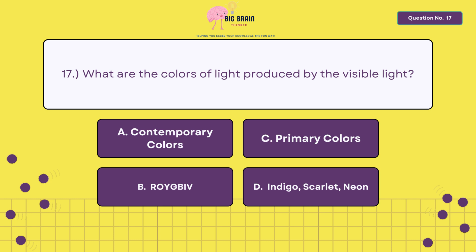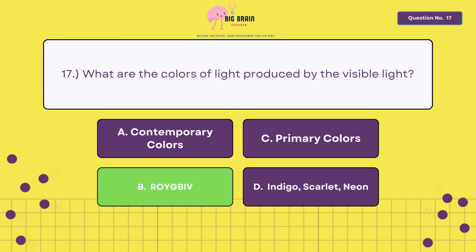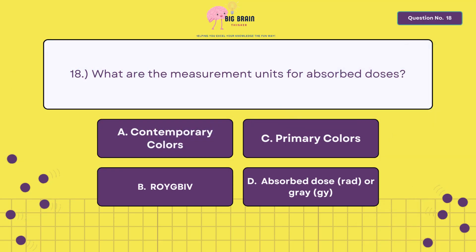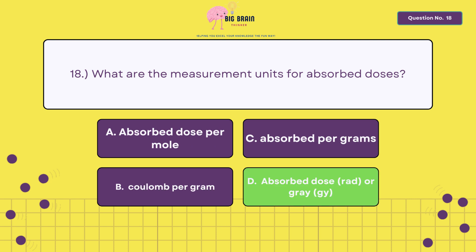Seventeen, what are the colors of light produced by visible light? Eighteen, what are the measurement units for absorbed doses? The answer is letter D, absorbed dose, rad or gray.